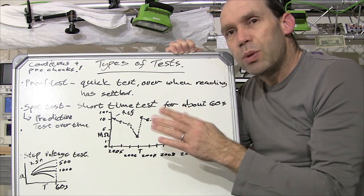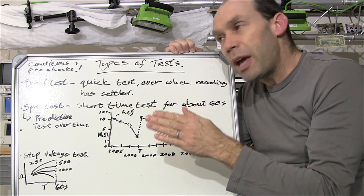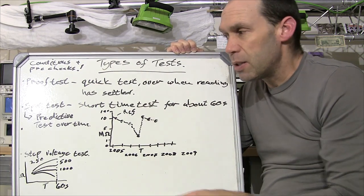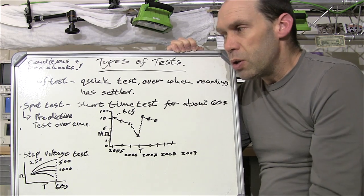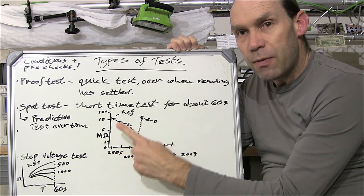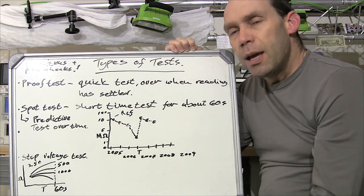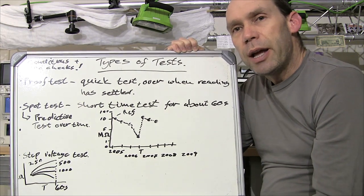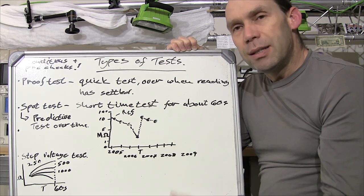Now from those spot tests which give you a far more reliable indication than the quick proof test, you can use those for predictive testing. Now what I mean by predictive testing, so let's say I've got this little graph over here. If you're in a factory installation, under ideal conditions, let's say you get a new motor that comes in.